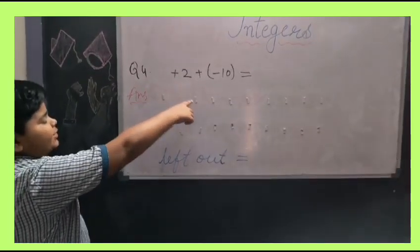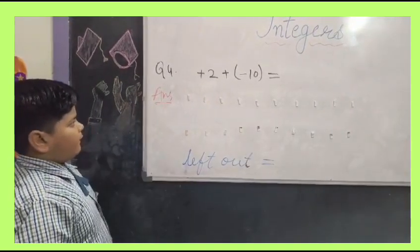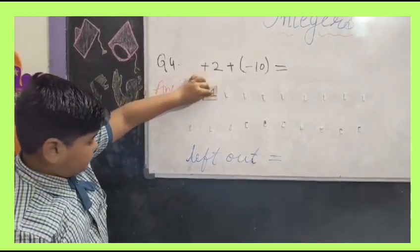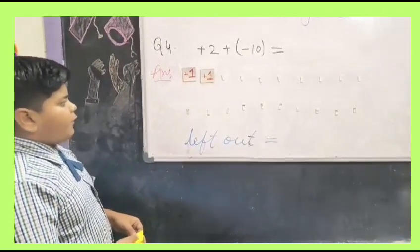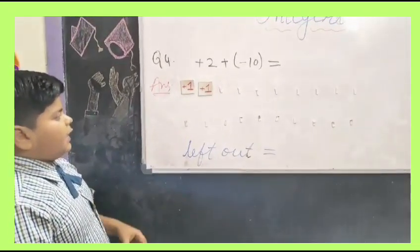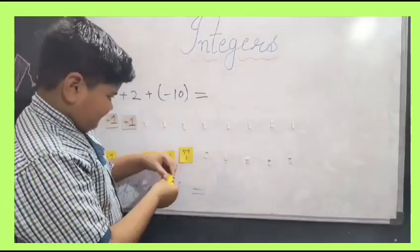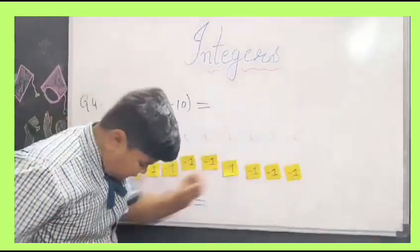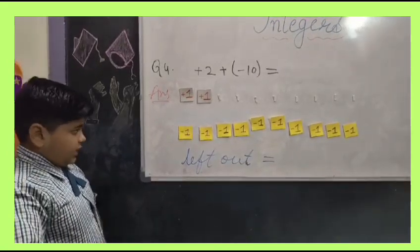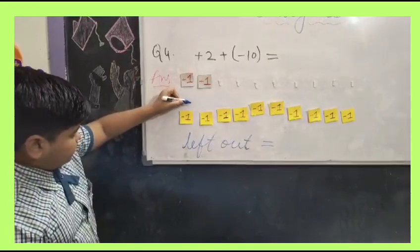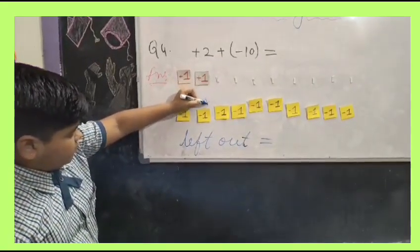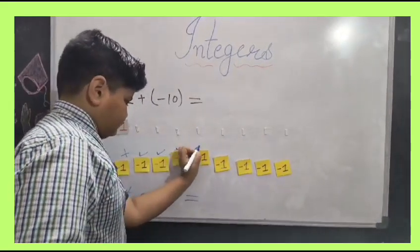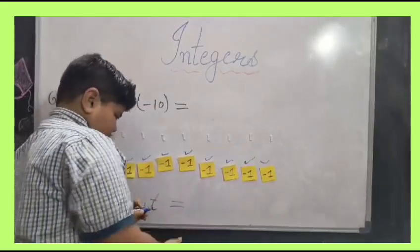It has plus 2. So we will paste 2 positive integers. Now we will paste 10 negative squares. Here we can see 2 squares will be cancelled out. Now we are left with 8 negative squares. The answer will be negative 8.